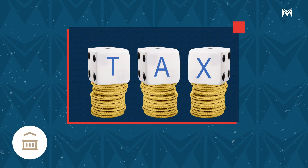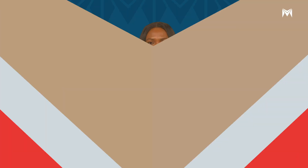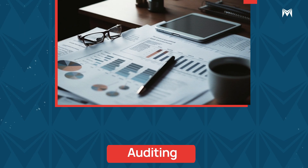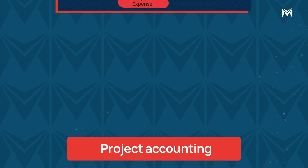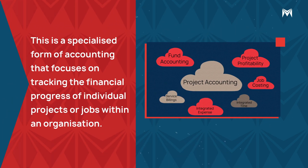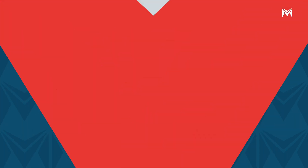Tax accounting is another area. This branch of accounting deals with tax planning and compliance. Tax accountants help companies and individuals navigate complex tax laws and ensure they remain compliant with tax regulations. Auditing — auditors examine companies' financial statements and internal controls and accounting practices to ensure they maintain a specific level of quality and integrity. Project accounting is a specialized form of accounting that focuses on tracking the financial progress of individual projects or jobs within an organization. Large, complex projects with multiple kinds of expenses require accurate disbursement and tracking of funds to ensure the integrity of the project and adherence to tax laws and regulations.